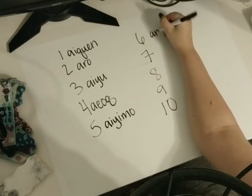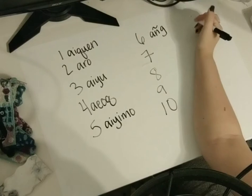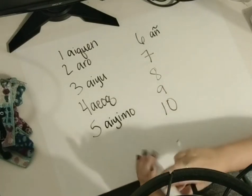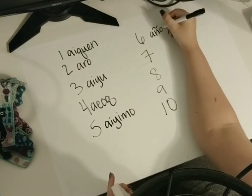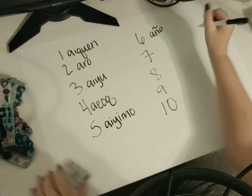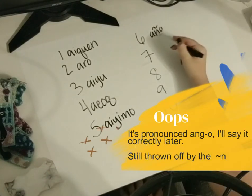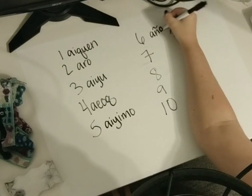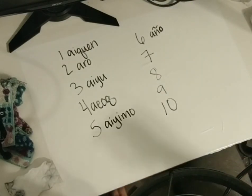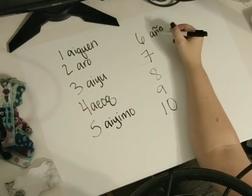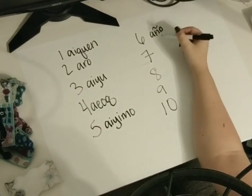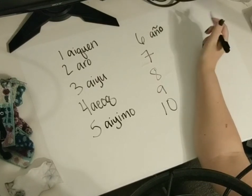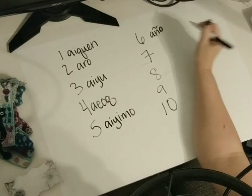Six is — and this is what I was telling you about — the letter with the NG sound. It's spelled with what looks like a G, but remember it's an NG sound, not a G. So six is Aiyongo — Aiyongo. That's confusing because it looks like it could be a Spanish word, but it's Aiyongo.